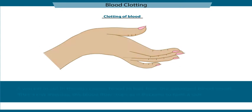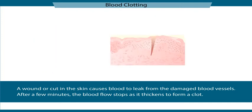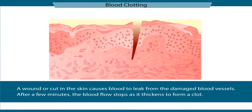As seen here, a wound or cut in the skin causes blood to leak from the damaged blood vessels. You can also observe that after a few minutes, the blood flow stops as the blood thickens to form a clot. This sectional view shows the wound on the skin where clotting will take place.